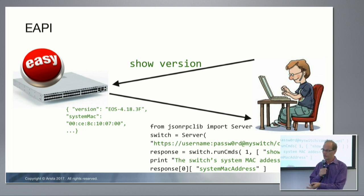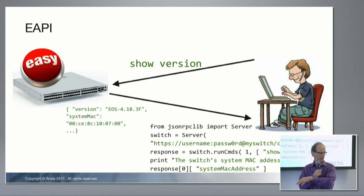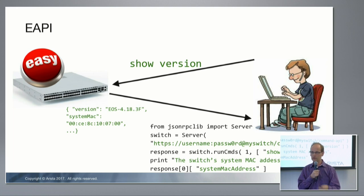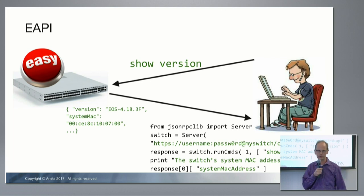There's a little eAPI explorer built into the switch. You type in the command you want, hit return, and it shows you the JSON that will come back, so you can see exactly where and how to extract the information you want from the command.